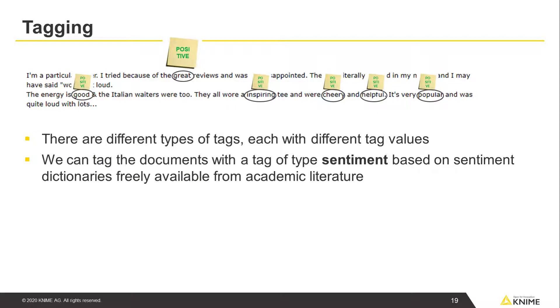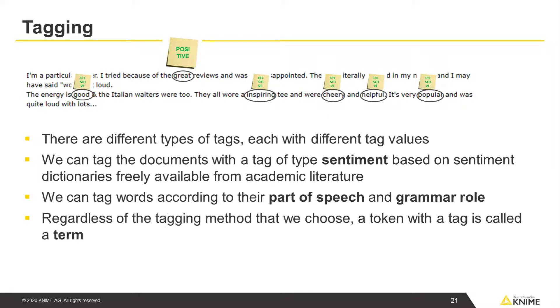We can tag the documents with a tag of type sentiment, based on sentiment dictionaries that are freely available from academic literature. Another common task in text analysis is to tag words according to their part of speech and grammar role. Regardless of the tagging method that we choose, a token with a tag is called a term.